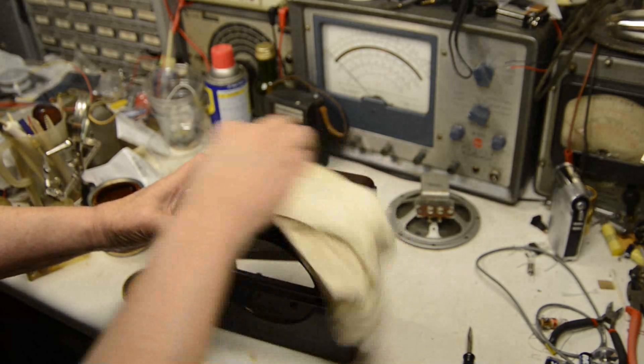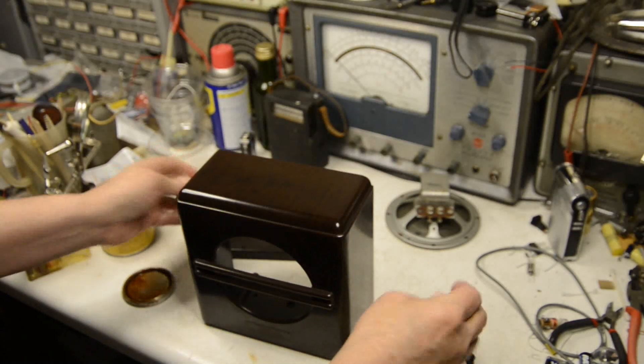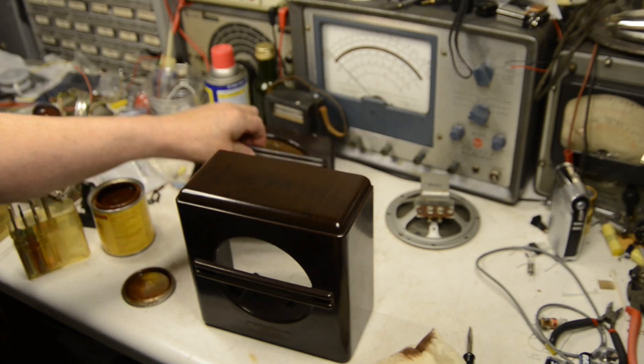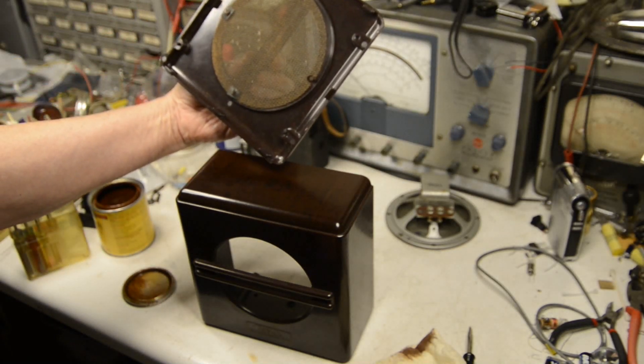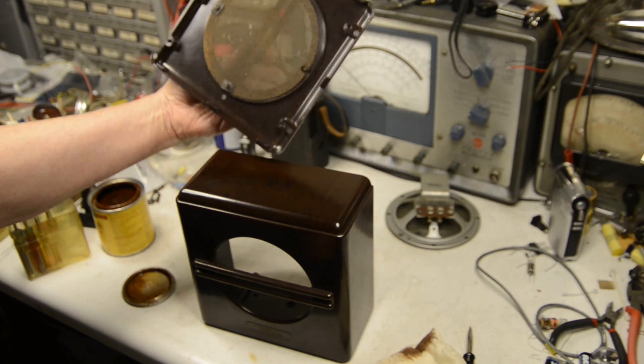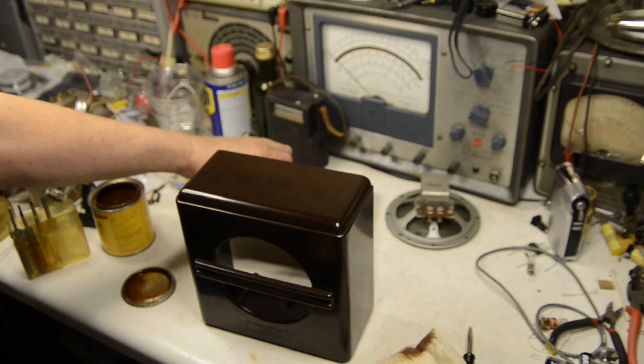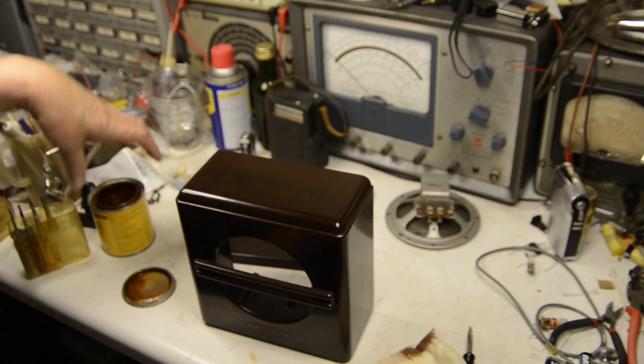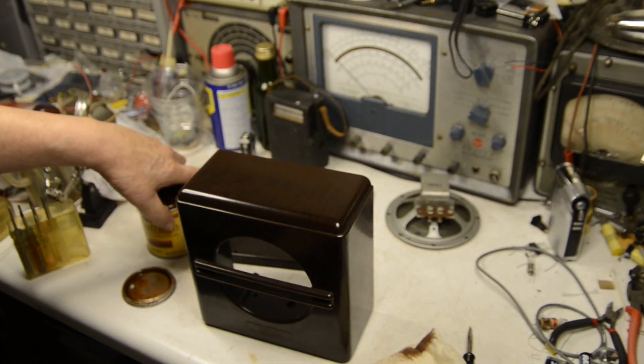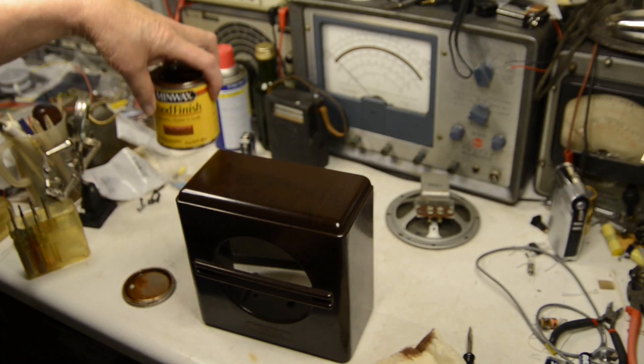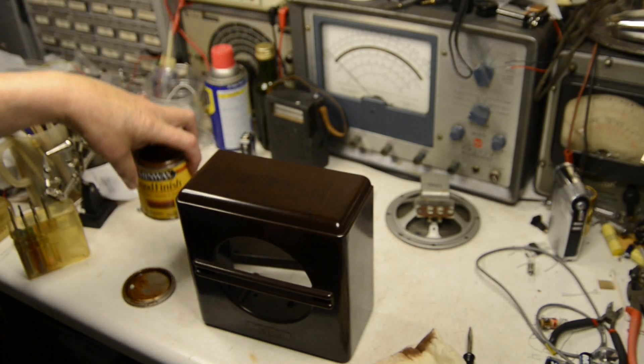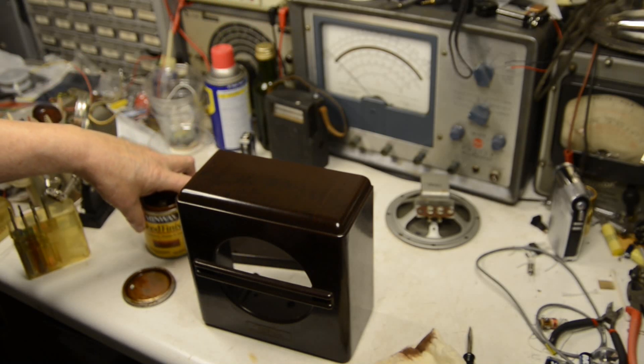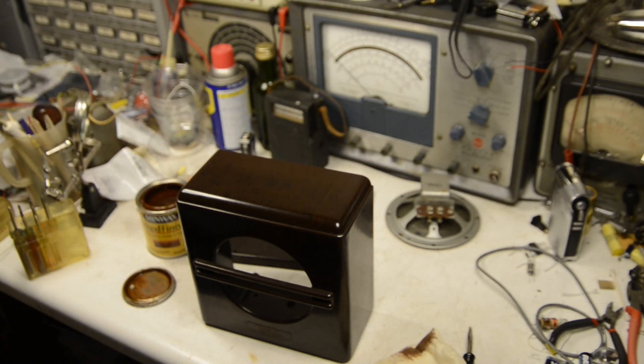Now the color that you'd use depends on the Bakelite. That's getting pretty good. This one happens to be, let's see, English Chestnut. So I'm going to continue with the rest of the cabinet. We'll take a look at it when we're done.